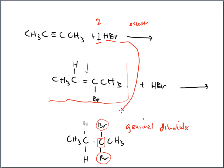Two moles means two steps: taking the triple bond down to a double is step one, and taking the double down to a single is step two. 'Excess HBr' means the same thing — take it all the way from the alkyne to the alkane.